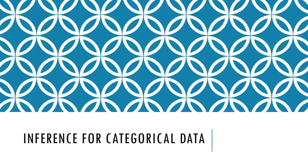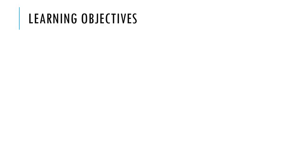Now on to talking about categorical data. So far we've been talking about using numerical data for inference, but now we're going to expand that a little bit. We're going to talk about categorical data. We're going to use a hypothesis test for proportions and also the chi-square test — there's a chi-square test called the test of independence and one called the goodness of fit.